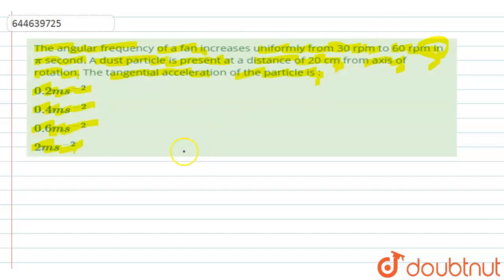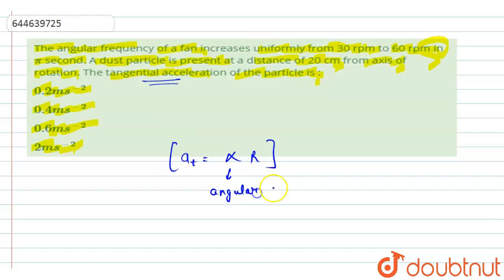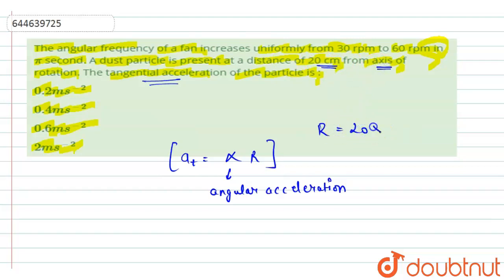We know that tangential acceleration is given as a_t equals alpha times r, where alpha is the angular acceleration and r is the radius of the circle in which the particle is performing circular motion. Here r is given as 20 centimeters, the distance from the axis of rotation, so r = 20 × 10⁻² meters.